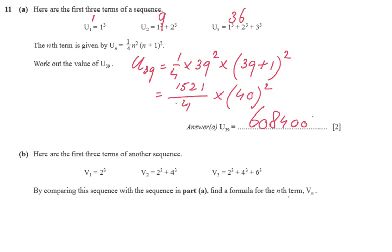So it's not going to be too difficult. They say, now here are the first three terms of another sequence: 2³, then 2³ + 4³, and the third term is 2³ + 4³ + 6³. These are not consecutive numbers anymore like before, but you could say these are consecutive even numbers.